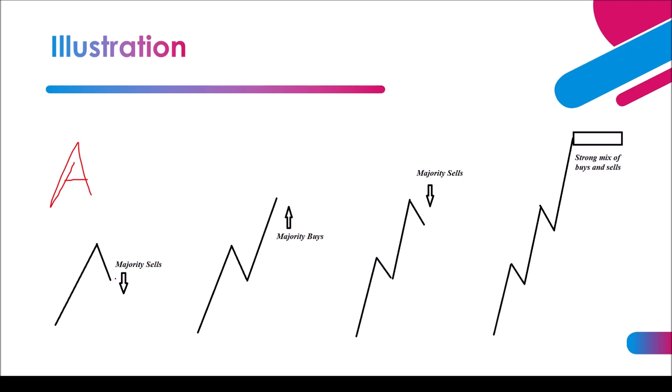Starting at point A, we can see that we had a rise and a drop. This structure gives rise to the majority selling the market because they've seen a turning point. It's normal to see a lot of people making sales at these points. If we look at millions of traders participating within the markets, you'd see that millions of traders are actually taking shots whenever they see a small turning point like that.